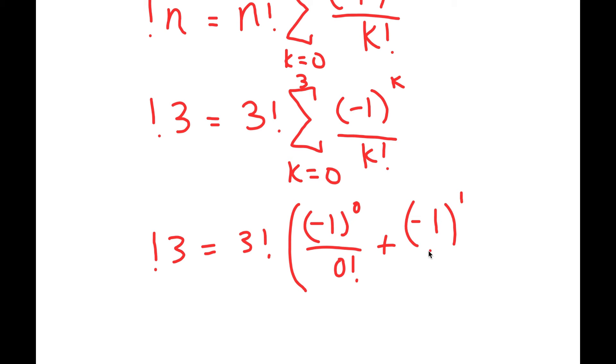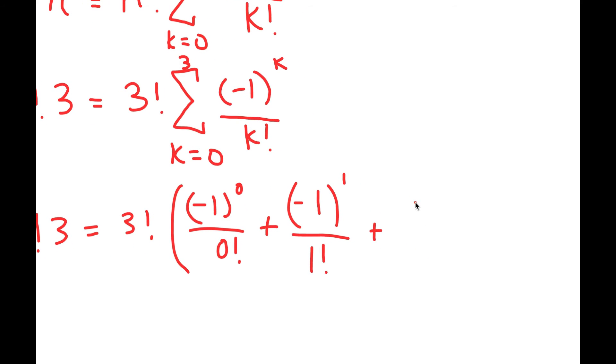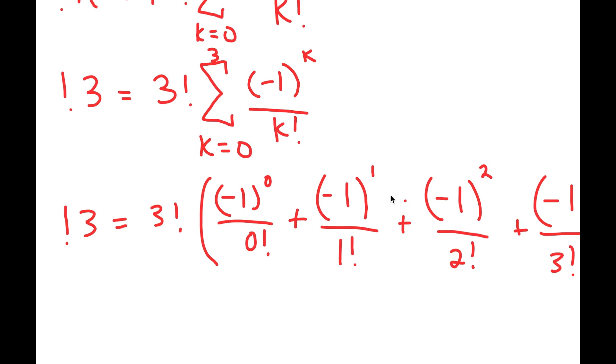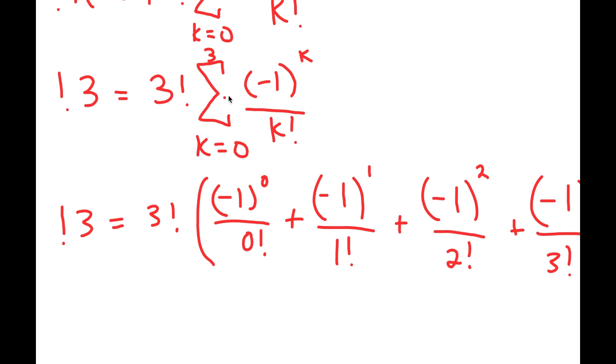So I have negative one to the power of one over one factorial plus negative one to the power of two over two factorial. Finally, plus negative one to the power of three over three factorial. And if you guys still don't understand how to do summation, I would recommend going to watch a video on.